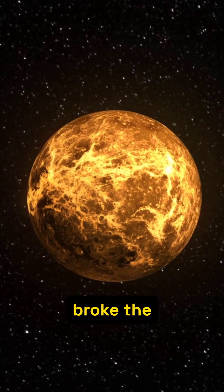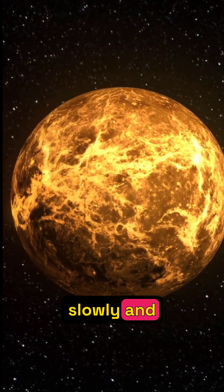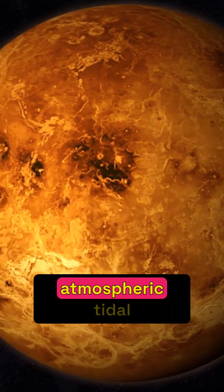But two planets broke the mould. Venus rotates incredibly slowly and backward, likely due to a colossal impact or extreme atmospheric tidal forces.